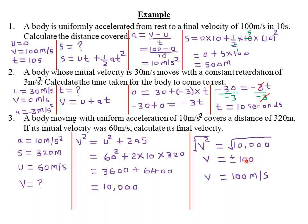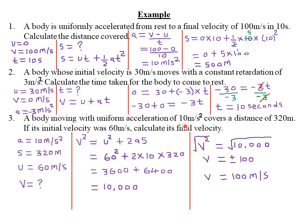Since the body is uniformly accelerating, its final velocity must be greater than the initial velocity of 60 m/s. Negative 100 is less than 60, so we reject it. Positive 100 is greater than 60, so we accept it. Therefore, the final velocity v = +100 m/s.